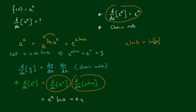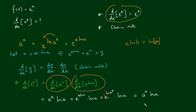So we get e to the u times log of a, and e to the u is e to the x·log(a) times log of a. Now e to the x·log(a) equals e to the log of a to the power of x. Copying down the log of a and cancelling e with the natural logarithm, we get a to the x times log of a. That's quite an elegant result.